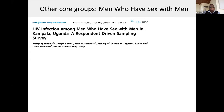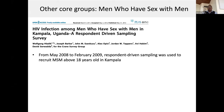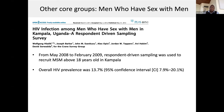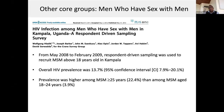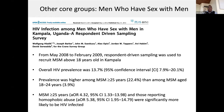Some studies have been done among men who have sex with men. In this particular study by Wolfgang Landig, respondent-driven sampling was used from May 2008 to February 2009 to recruit MSM above 18 years old in Kampala. The overall HIV prevalence was estimated at 13.7%. Prevalence was higher among MSM above 25 years than those who were younger. MSM above 25 years and those who reported homophobic abuse were significantly more likely to be HIV infected in this study.